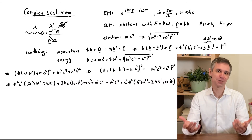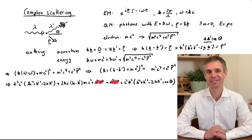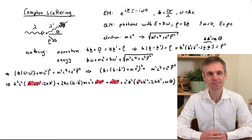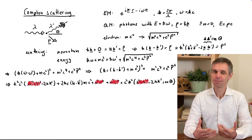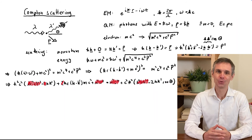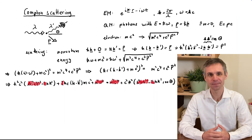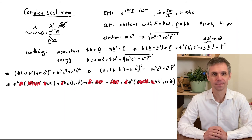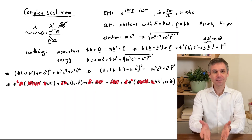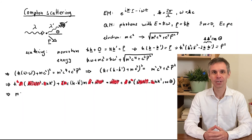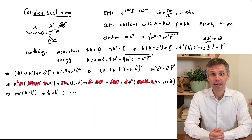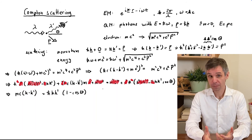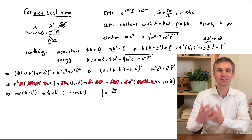Now, both sides contain a number of common terms that we can therefore cancel. The remaining terms contain a number of common factors — 2, c squared, and h-bar — that we can therefore also cancel. This leaves a small number of remaining terms that we can write in a suitable form, and to simplify this further, we multiply the expression by a suitable factor.